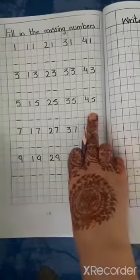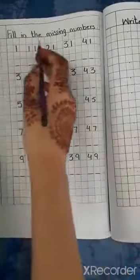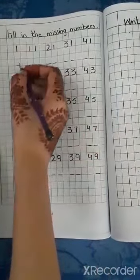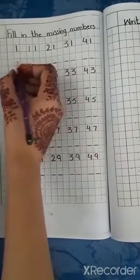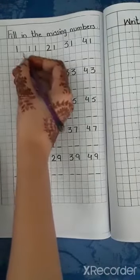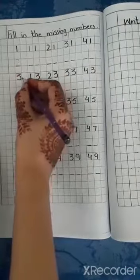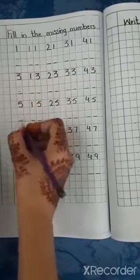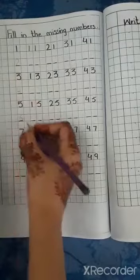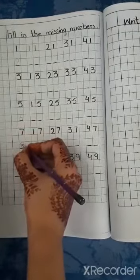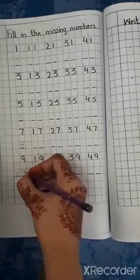Open page number 114. Fill in the missing numbers. 1, 2, 3, 4, 5, 6, 7, 8, 9, 10.